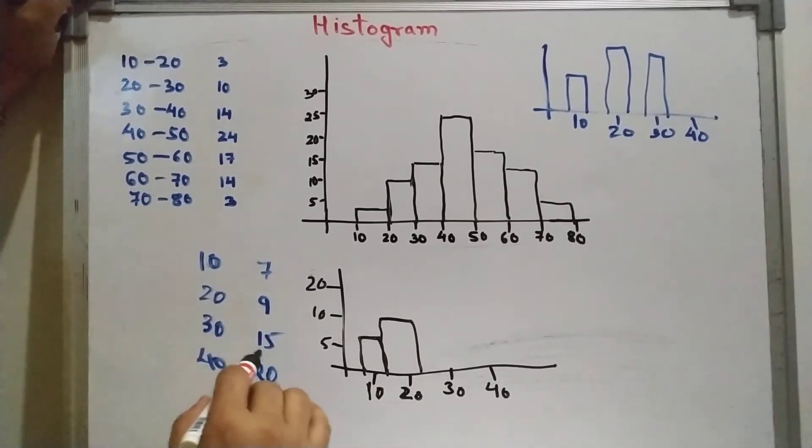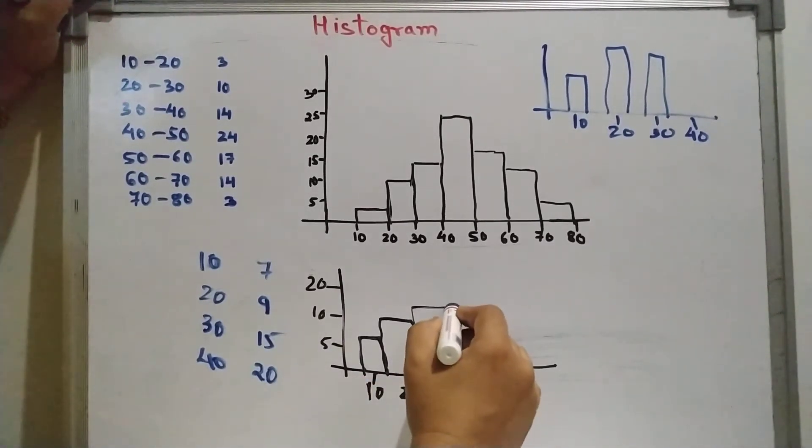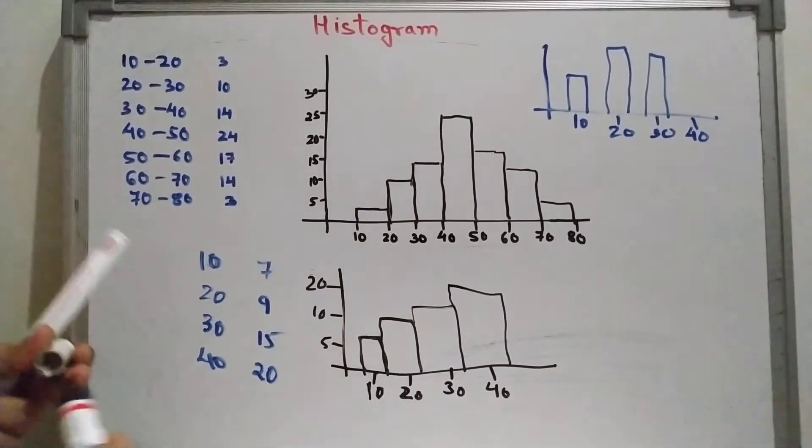Now look at 30. For 30, it is 15. So this is your 30. Up to 15, you raise it up to 15 then draw it like this. For 40, it is 20. So raise it up to 20 and draw it like this. So it will be like this.